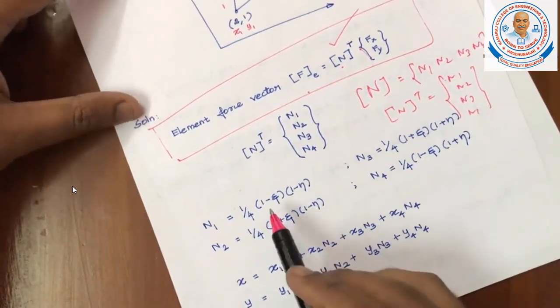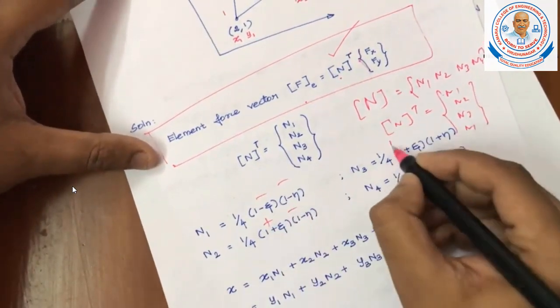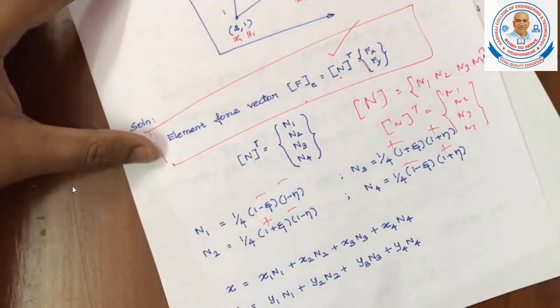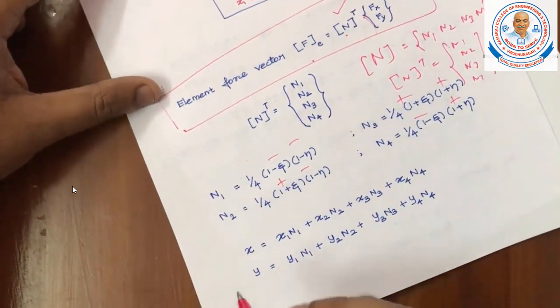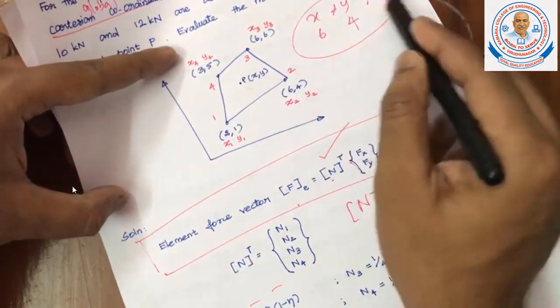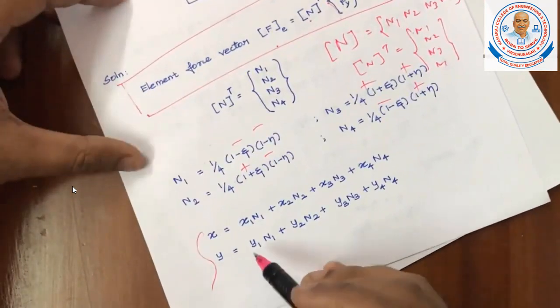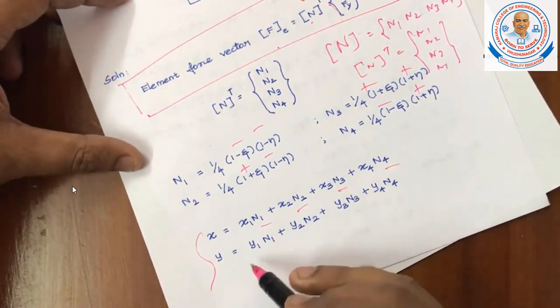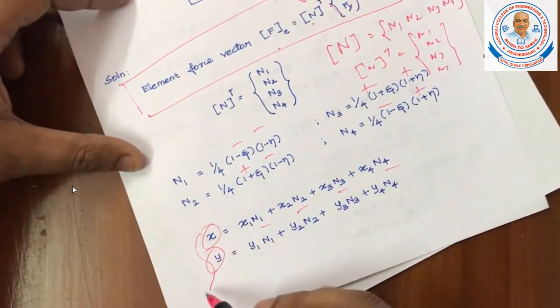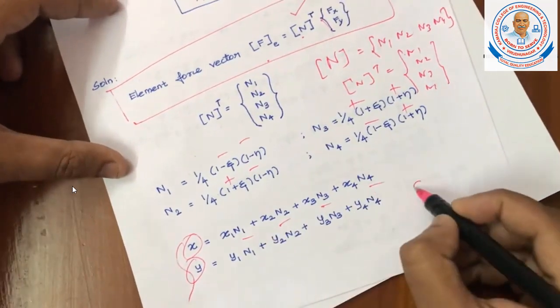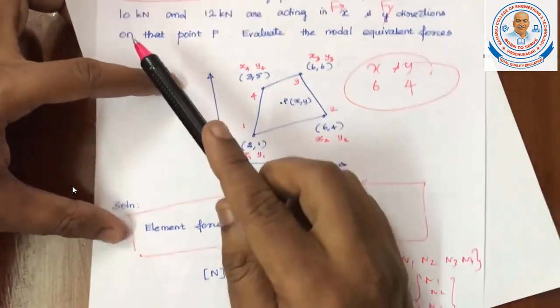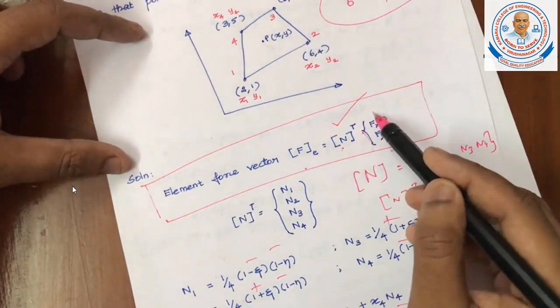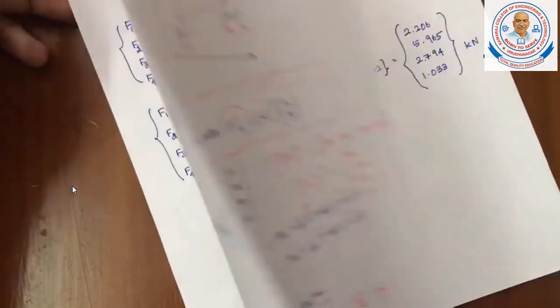What is N1, what is N2, what is N3, N4? In the last problem, you can see the derivative. Serendipity elements in terms of epsilon and theta. Since it is given in X, Y Cartesian coordinates, we have to use isoparametric formulation. Formula is X equals X1*N1 plus X2*N2 plus X3*N3 plus X4*N4. Similarly, Y equal to Y1*N1 plus Y2*N2 plus Y3*N3 plus Y4*N4. We have to find the natural coordinates, then we have to find out the element force vectors.